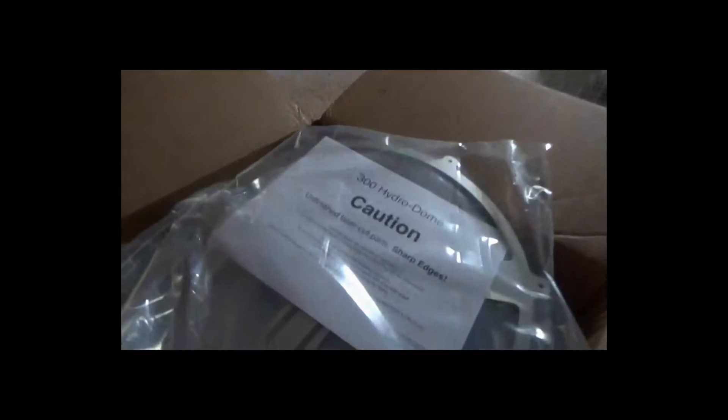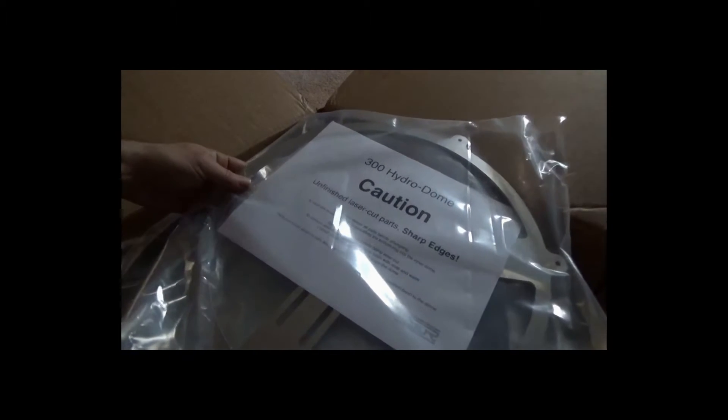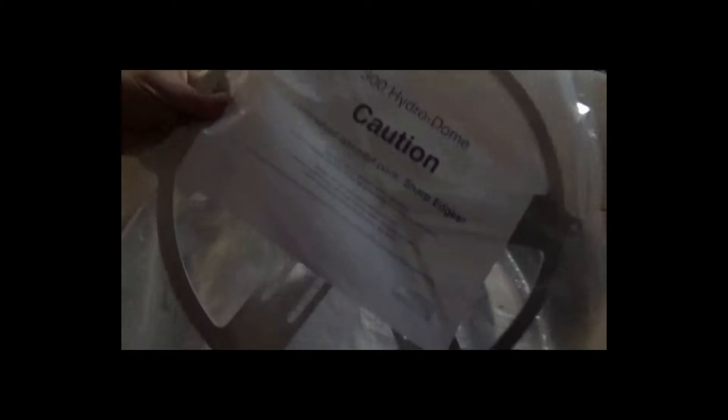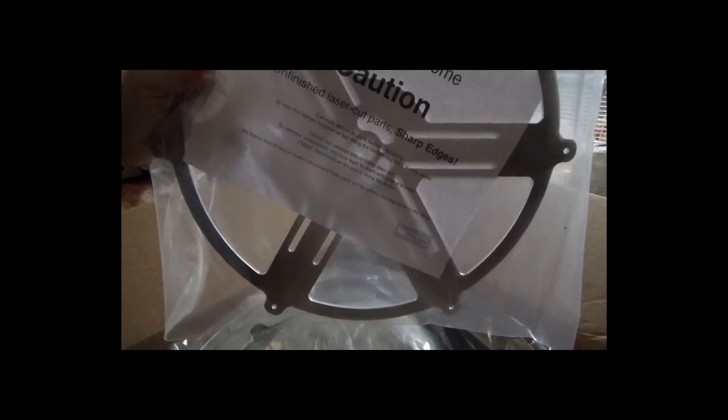I've opened the box already and I'm going to show you what it looks like. There's a little package here, tells you it's a 300mm hydrodome and it says it's unfinished laser cut parts with sharp edges and this is very true. You'll see this is the ring right here which you attach to your Lazy Susan.